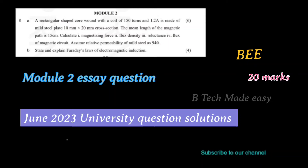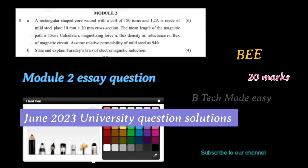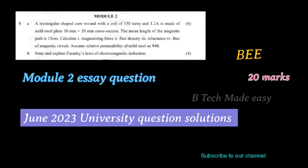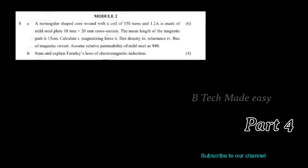A rectangular shaped core wound with foil of 150 turns and 1.2 ampere is made of mild steel plate, 10 mm by 20 mm cross section. The mean length of the magnetic path is 15 cm. Calculate: first, the magnetizing force; second, the magnetic flux density; third, the reluctance; and fourth, the flux of the magnetic circuit. Assume the relative permeability of the mild steel is 940.